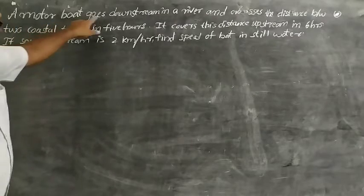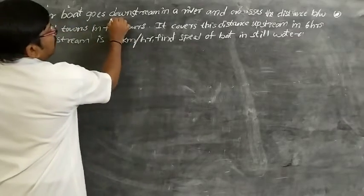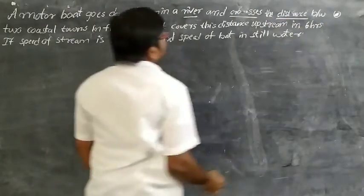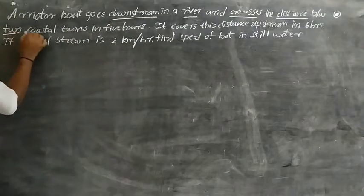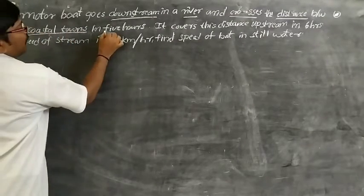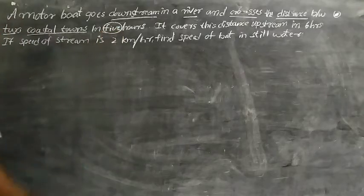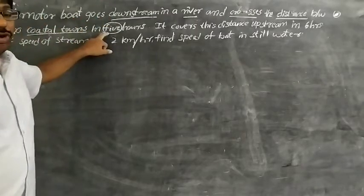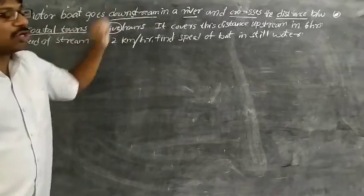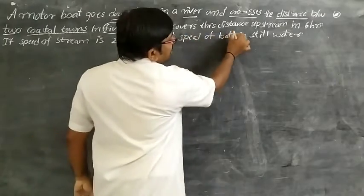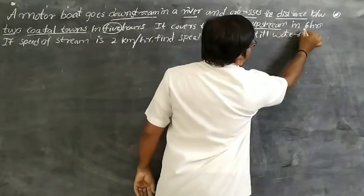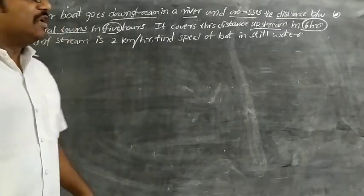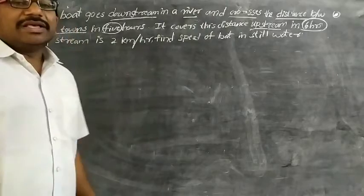Now let's do one problem. A motorboat goes downstream in a river and crosses the distance between two coastal towns in 5 hours. It covers the same distance upstream in 6 hours. So in downstream the time taken is 5 hours, and in upstream the time taken is 6 hours.